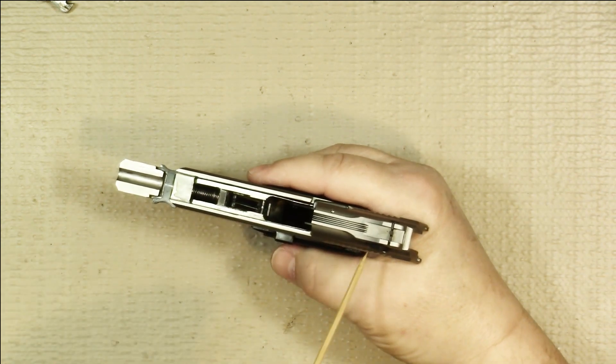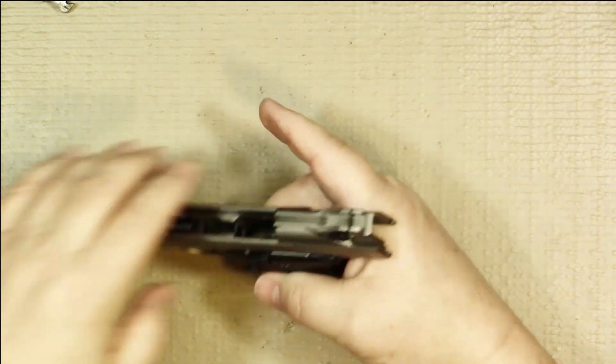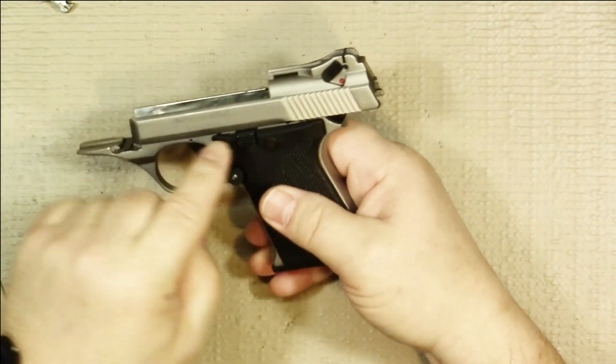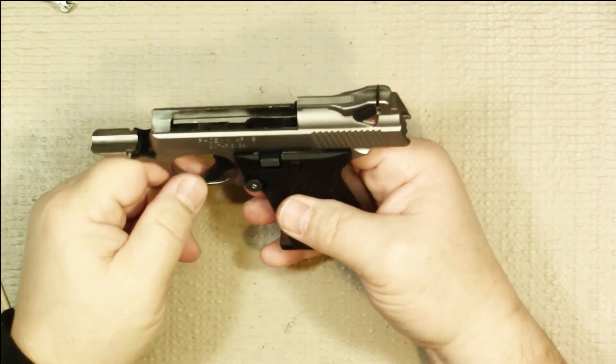Now the next step would be to take the slide off of the frame. So we'll put our magazine back in because you have to have the magazine in for the safety to be able to take it off of safe and remove the slide lock.